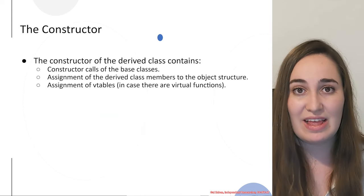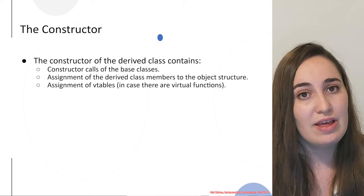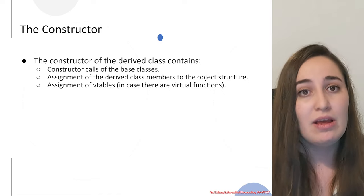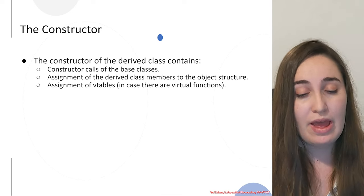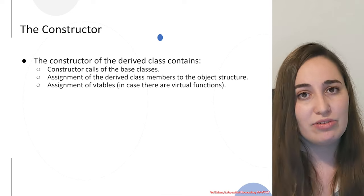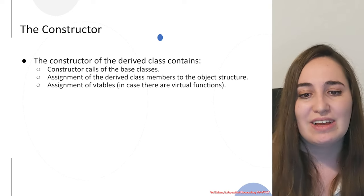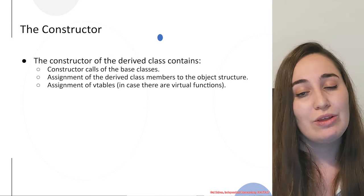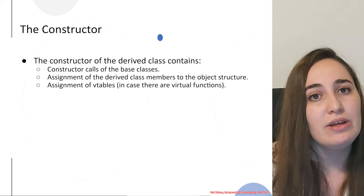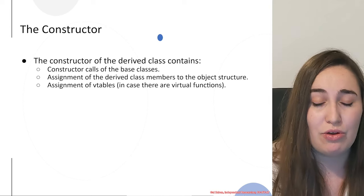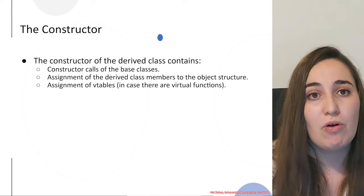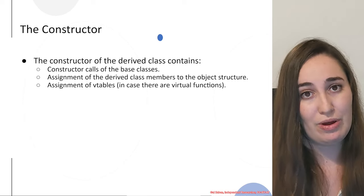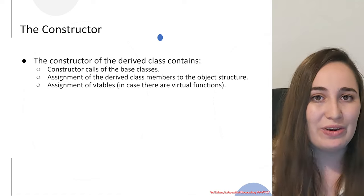Now we will discuss the constructor. The constructor in multiple inheritance is quite similar to the constructor in basic inheritance, with a few differences. What you typically see is that you would have more than one constructor call inside the constructor of the derived class, meaning more than one call to the base class constructor. This makes sense because if you have more than one base class, you have to call more than one constructor.